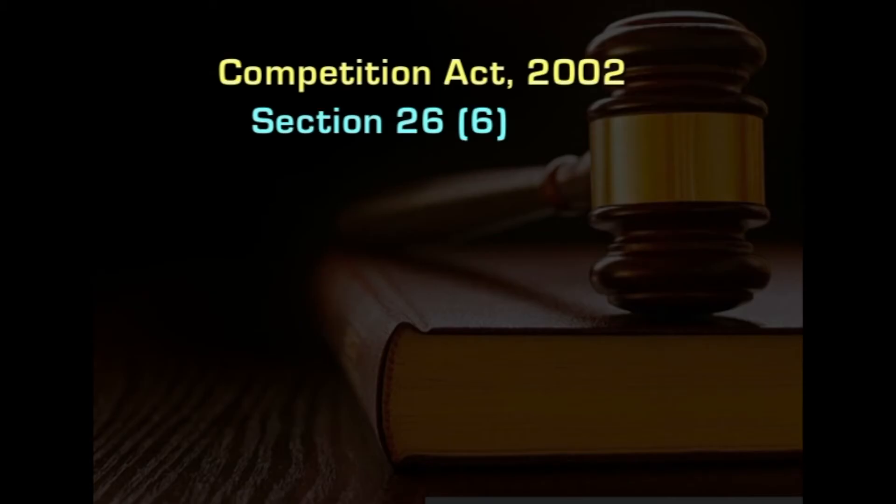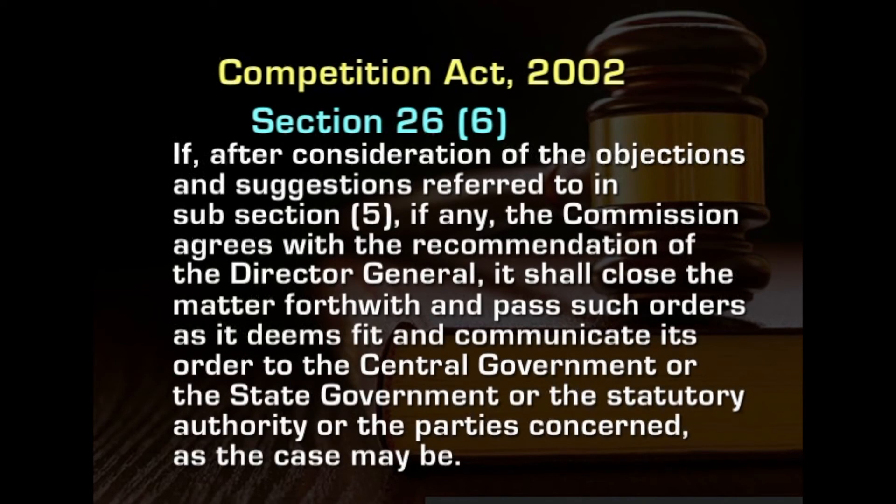Section 26(6) provides: if after considering the objections and suggestions referred to in subsection 5, the commission agrees with the recommendations of the Director General, it shall close the matter forthwith and pass orders as it deems fit, communicating its orders to the central government, state government, statutory authority, or parties concerned. So under subsections 5 and 6 together, the commission can affirm the Director General's finding after hearing the government and parties, and close the matter with appropriate orders.